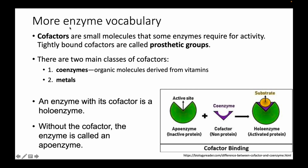A cofactor is a small molecule that some enzymes require for activity. If it's especially tightly bound, it's called a prosthetic group — meaning it doesn't unbind. There are two main classes: coenzymes, which are organic molecules derived from vitamins like vitamin B12, and metals. An enzyme with a cofactor bound is called a holoenzyme; without the cofactor, it's called an apoenzyme, which is the inactive form.